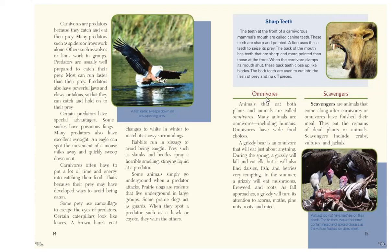For the third group of consumers, we have the omnivores. Animals that eat both plants and animals are called omnivores, including humans. Omnivores have wide food choices. A grizzly bear is an omnivore that will eat just about anything. During the spring, a grizzly will kill and eat elk, but also find daisies, fish, and berries tempting. In the summer, a grizzly will eat mushrooms, fireweed, and roots. As fall approaches, a grizzly turns its attention to acorns, moths, pine nuts, roots, and mice.